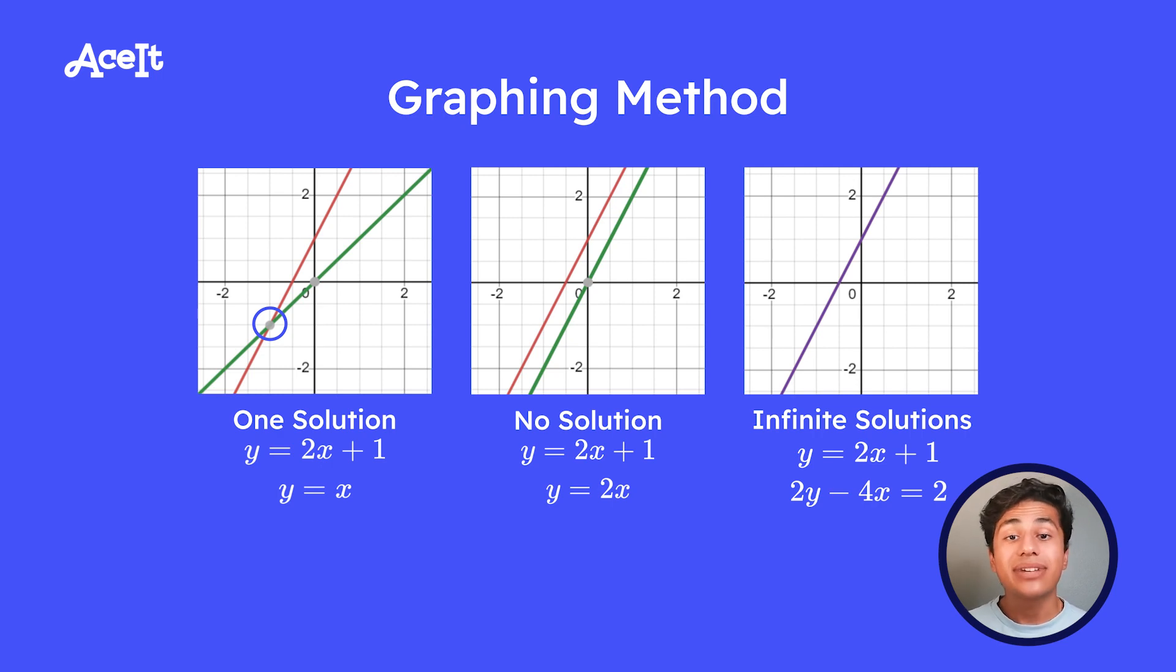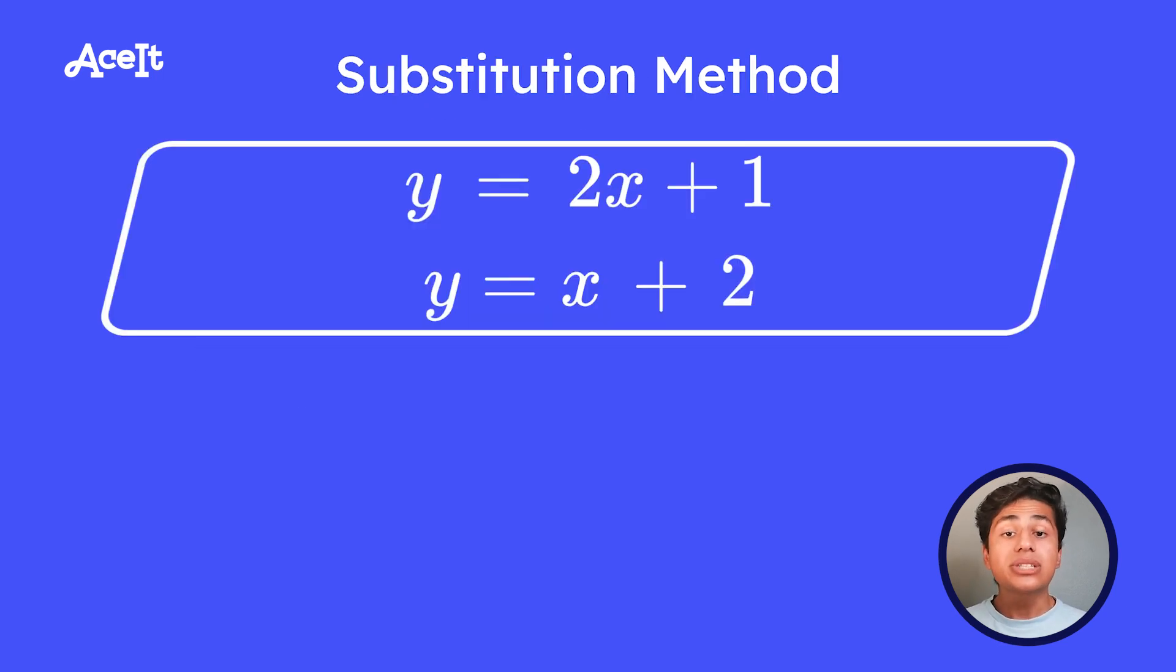The next method we have is substitution. The goal of this one is to isolate one variable and then substitute that isolation into the other equation. So here we're given y equals 2x plus 1 and y equals x plus 2. In this case, both of the equations have y isolated. So it's up to us which one we decide to substitute. But since we know y equals both 2x plus 1 and x plus 2, we can set them equal to each other. From there, we can solve for x and know that x equals 1.